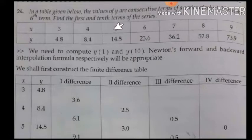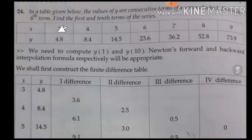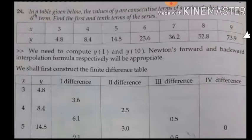To find the y value of the first term, since it comes at the beginning of the table, we have to use Newton's forward interpolation formula. The tenth term comes at the end of the given data, so we have to use Newton's backward interpolation formula to find that y value.